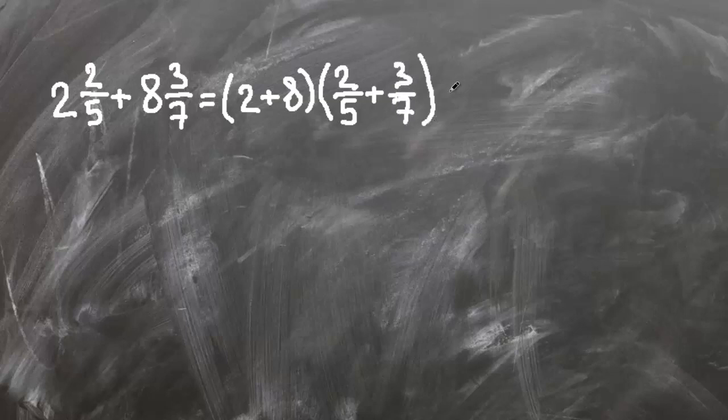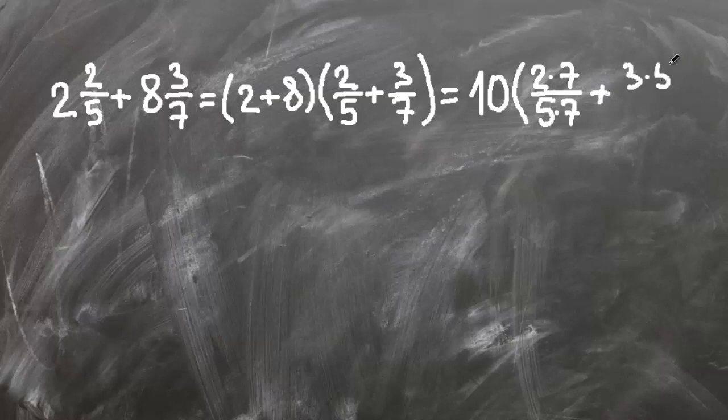Now this is ten and... So this is two times seven over five times seven plus three times five over seven times five.